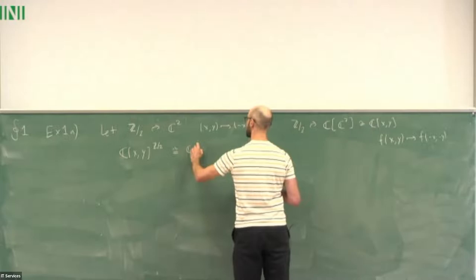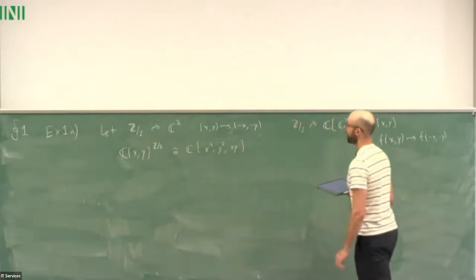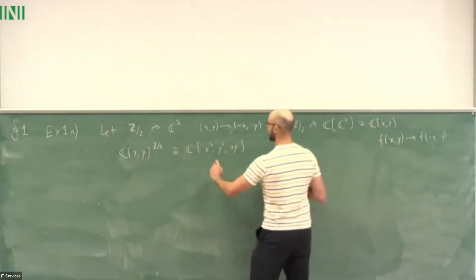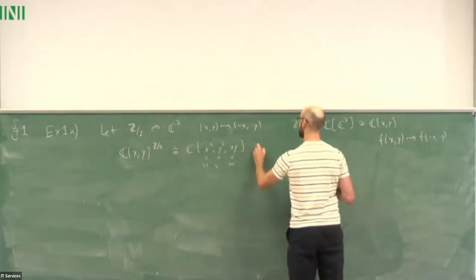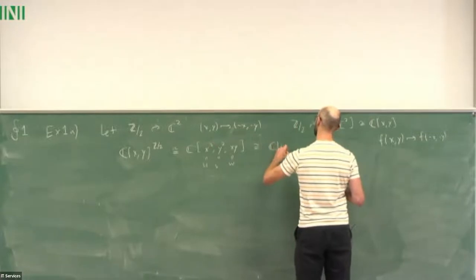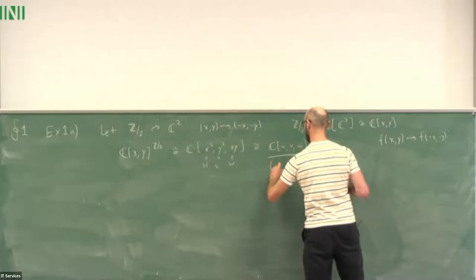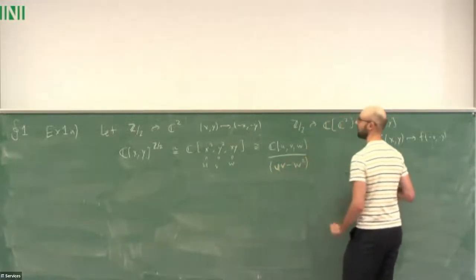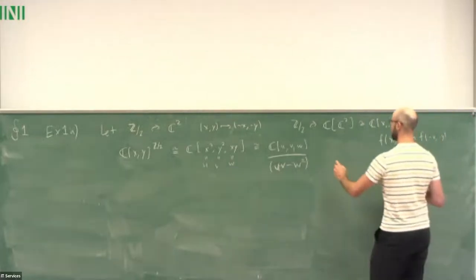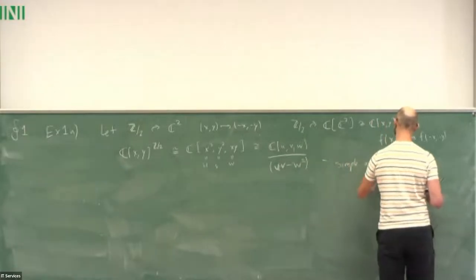The invariant polynomials are generated by x², y², and xy. If you give these different names, you'll notice there's some relation they satisfy: u times v equals w². So we have this simple — sometimes called A₁ — singularity.